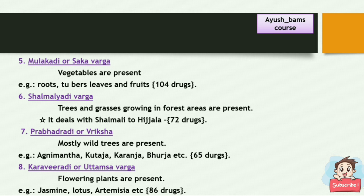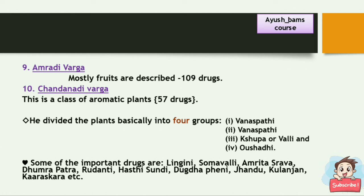Karaviradi Varga or Uttamsha Varga mainly contains flowering plants such as Jasmine, Lotus, etc. — total 86 drugs. Amradi Varga mostly describes fruits — total 109 drugs. Chandanadi Varga is a class of aromatic plants — total 57 drugs.